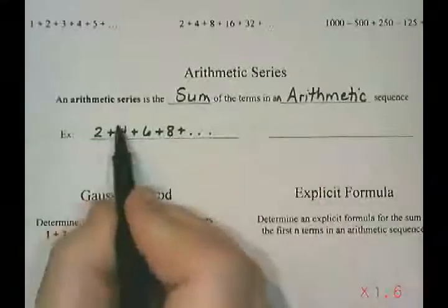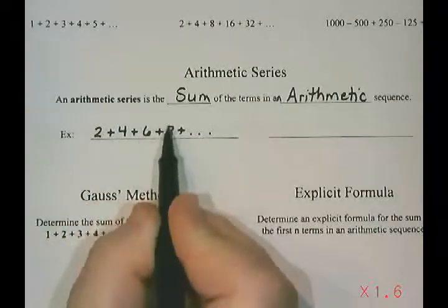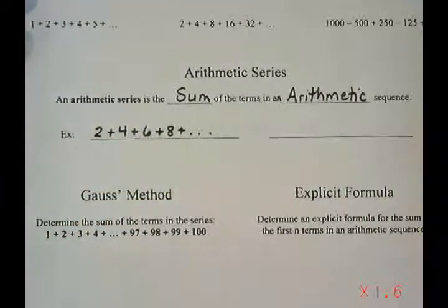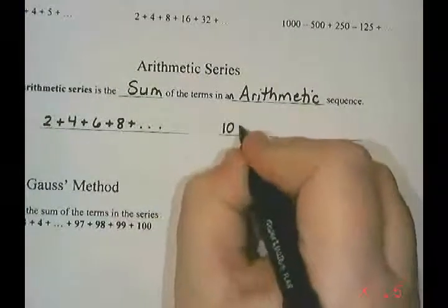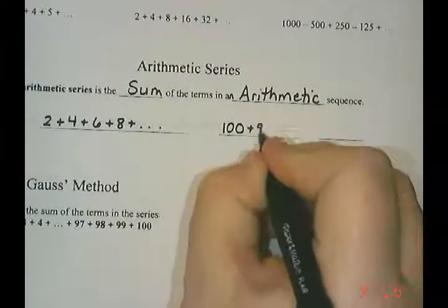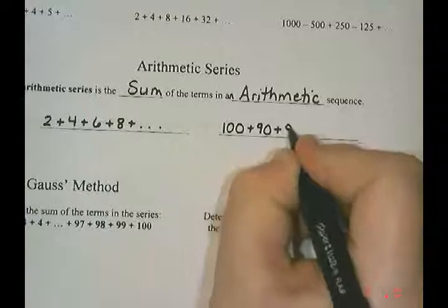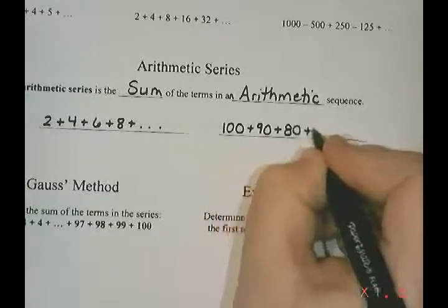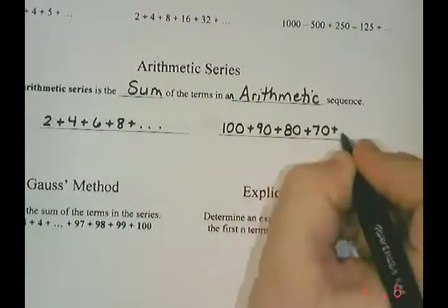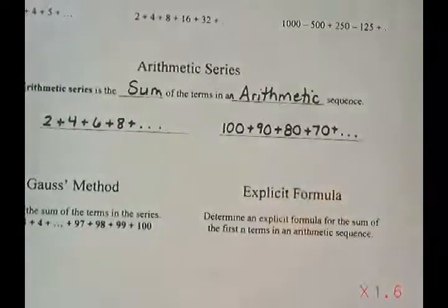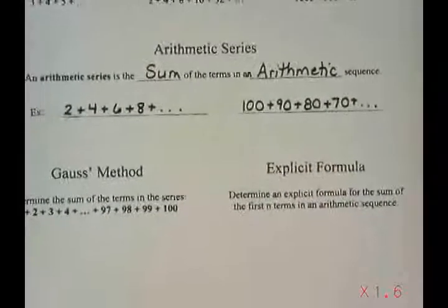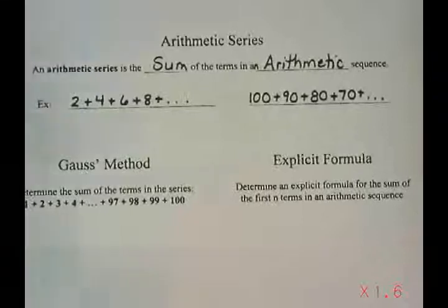Because every time here we're going up by two. Or we could do 100 plus 90 plus 80 plus 70 where every time we are subtracting 10.